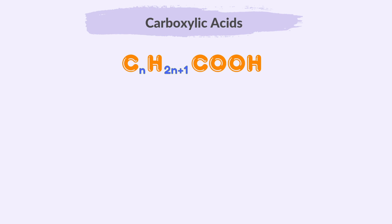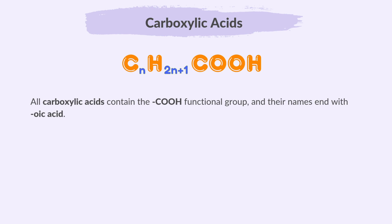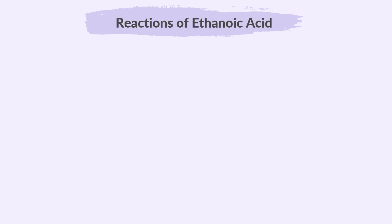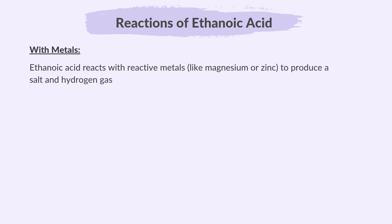All carboxylic acids contain the COOH functional group and their names end with 'oic acid'. Ethanoic acid is a carboxylic acid. Let's explore how ethanoic acid reacts with metals, bases, and carbonates.